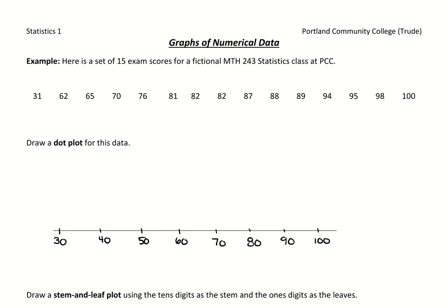The first graph we're going to look at is a dot plot. We're going to use these 15 exam scores from a made-up statistics class as our example. So our data — we have our 15 scores — and we want to make a dot plot.